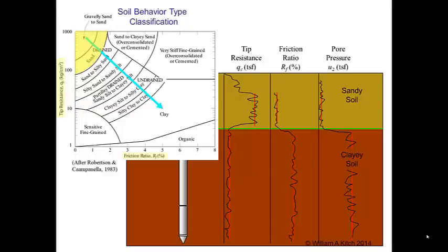Furthermore, we observe a large positive jump in pore pressure as the probe enters the second layer. This is an excess pore pressure generated during shearing of the soil as it passes around the cone. Because of this positive shear-induced excess pore pressure, we can deduce that the lower soil layer is probably a normally consolidated soil. It is important to note that this classification process is known as soil behavior type classification — it depends on the soil's behavior during CPT testing, not on the physical properties of grain size distribution and Atterberg limits used in the traditional unified soil classification system. A definitive classification would require samples and proper lab tests.